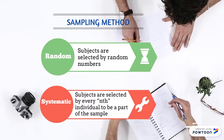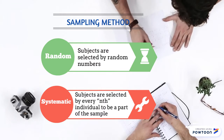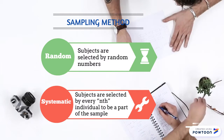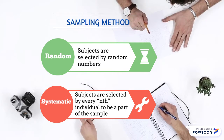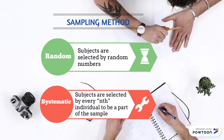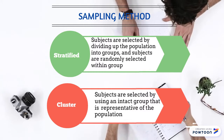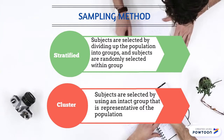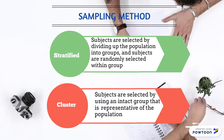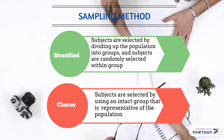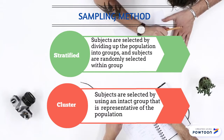Random: subjects are selected by random numbers. Systematic: subjects are selected by every Nth individual. Stratified: subjects are selected by dividing up the population into groups and subjects are randomly selected within groups. Cluster: subjects are selected by using an intact group that is representative of the population.